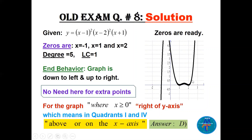At x = 1 and x = 2 the graph is tangent — it goes up, tangent at 2, then comes back tangent at 1. For x greater than or equal to 0 — from 0 to infinity — what is happening on the right side of the y-axis? The graph is above or on the x-axis, on the x-axis at 1 and at 2.